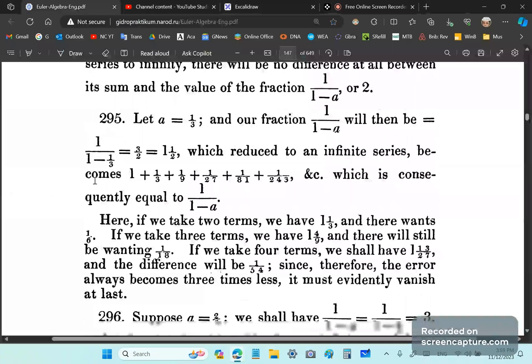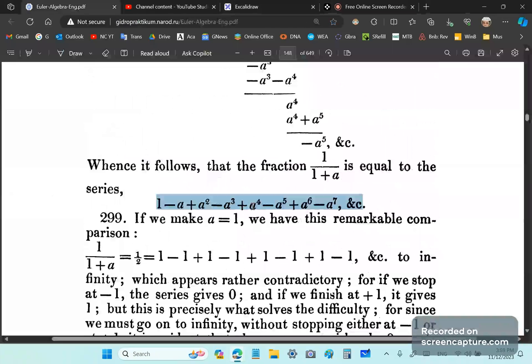And he decides that by continuing this process, we can write this expression here as an infinite series. Something like this. Here we go. Something like this. Which is utter nonsense because if you write it like that, then a, well, this expression, for example, is never equal to 1 over 1 plus a. Never.